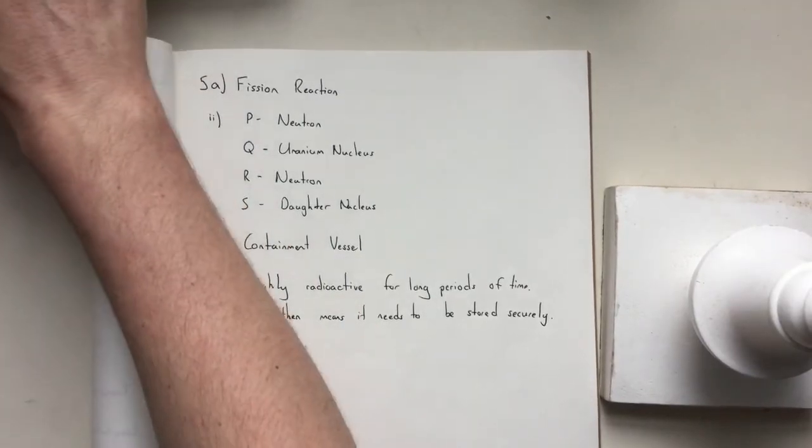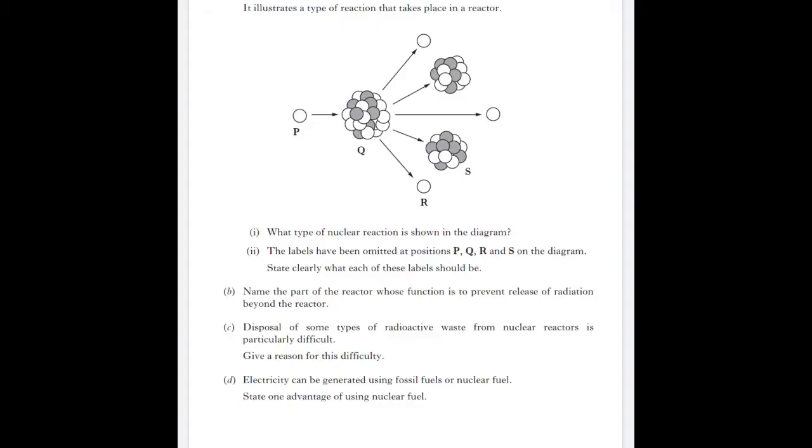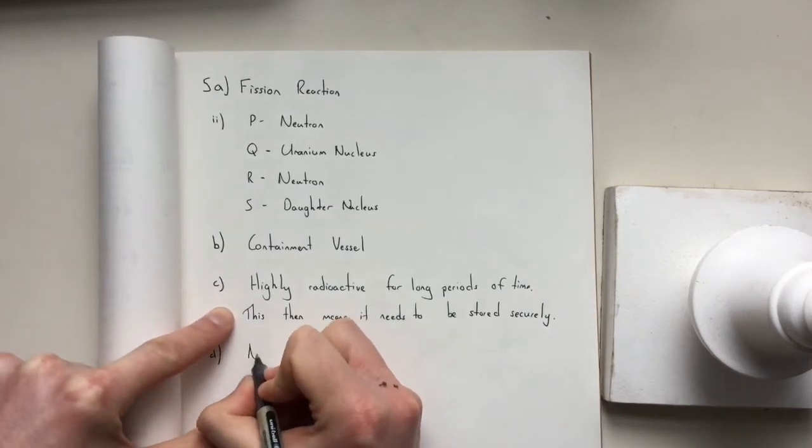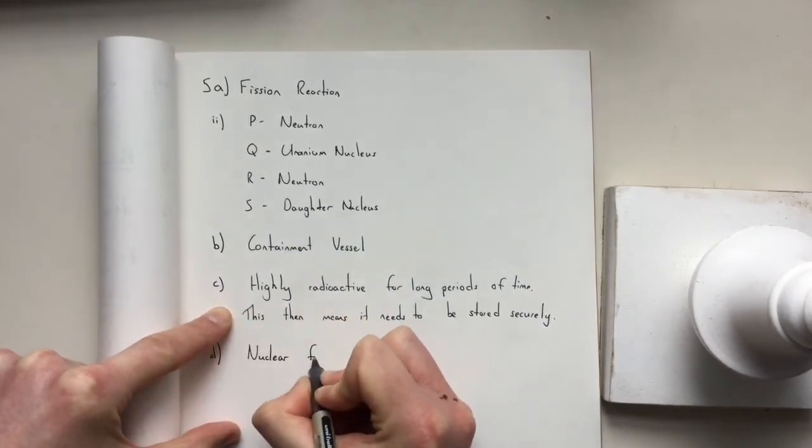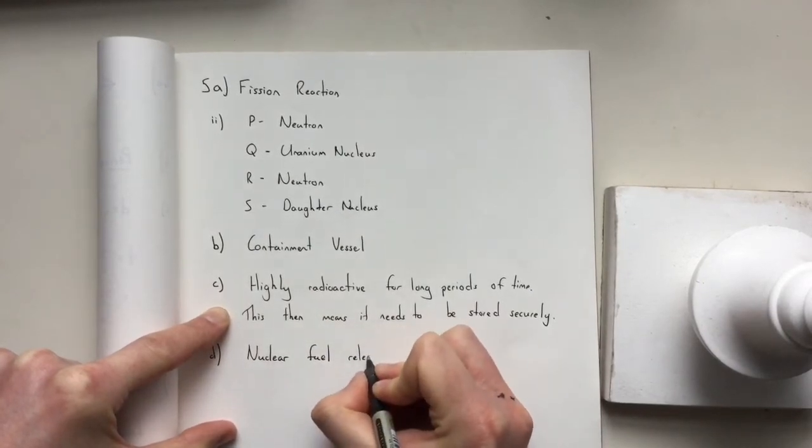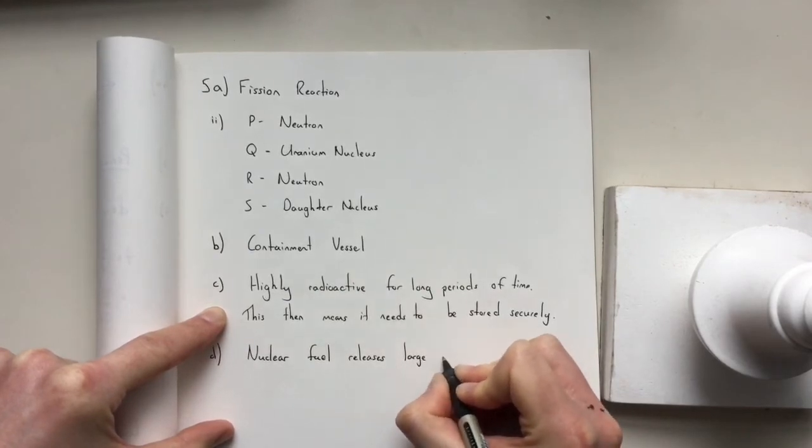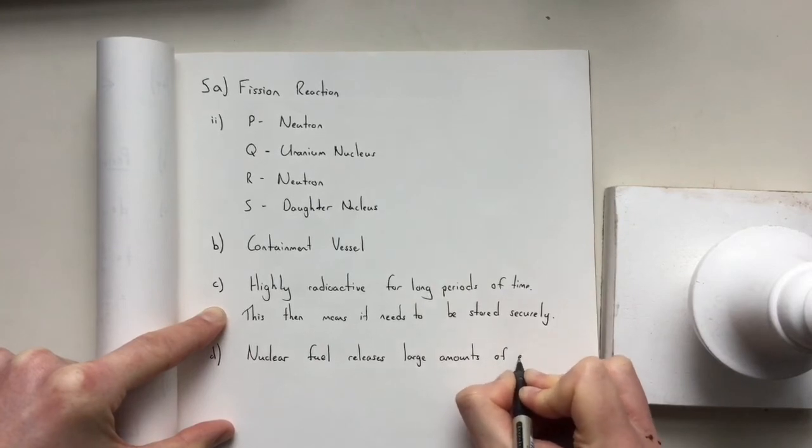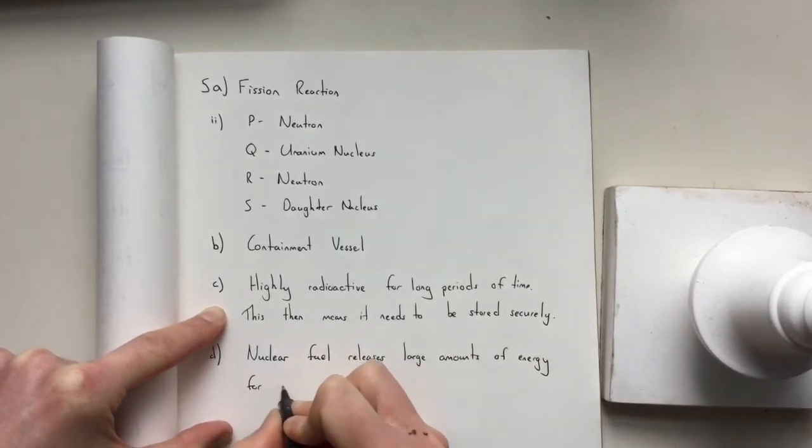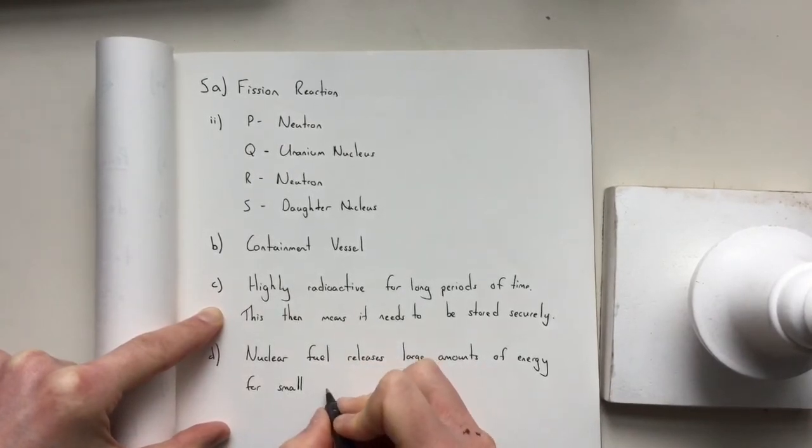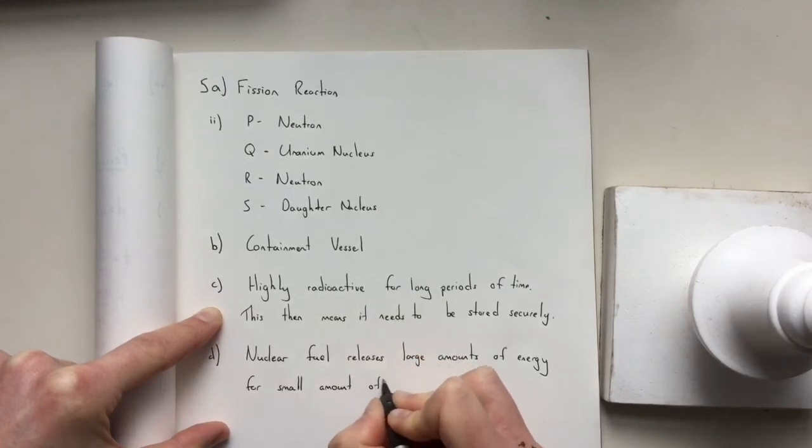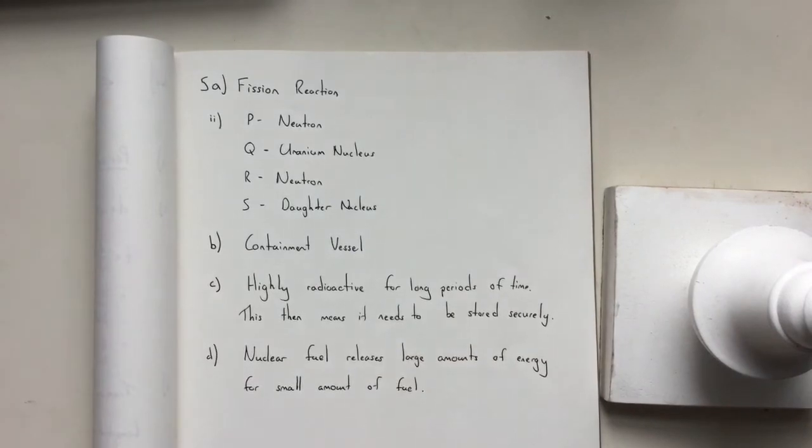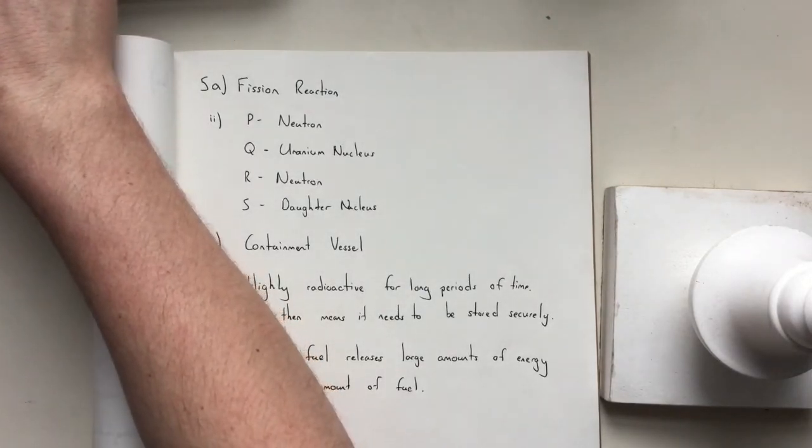The last question in this section is D. Electricity can be generated using fossil fuels or nuclear fuel. State one advantage of using nuclear fuel. One of the big ones is nuclear fuel releases large amounts of energy for small amount of fuel. A small bit of uranium can release a lot of energy. That's question five done. Let's see what question six has to offer.